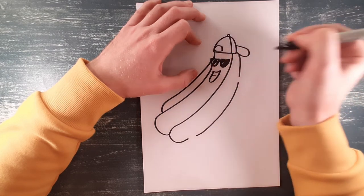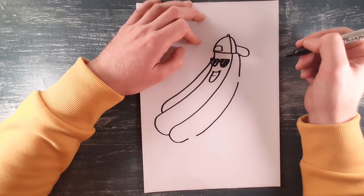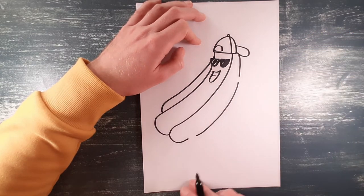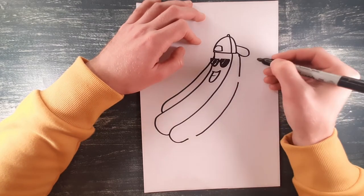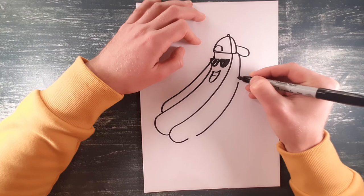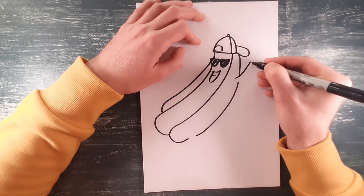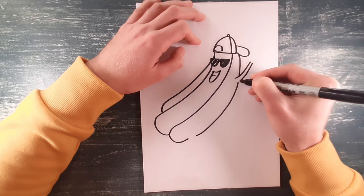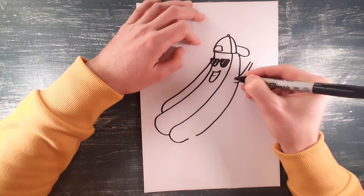So this bit is probably the trickiest part for his arms. Just going to do a nice sort of spaghetti arm going up into the air. Make sure you get a nice little circle, it gives a bit of shape to his arm.